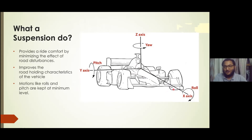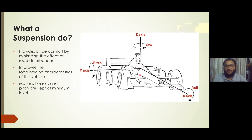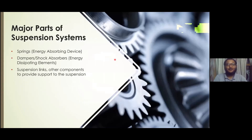If we take the y-axis and the vehicle rotates about this axis, then it is known as pitch. We also have another motion along the vertical z-axis, and if the vehicle rotates about this axis then it is known as yaw. So now coming to the major parts of the suspension system.